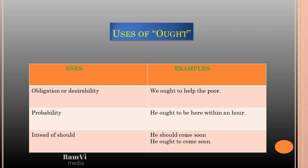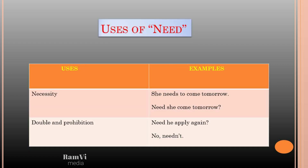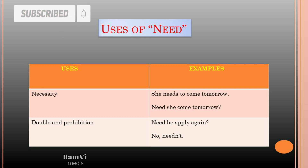Instead of 'should', we can also use 'ought to'. For example, instead of 'He should come soon', we can say 'He ought to come soon.' The next modal is 'need'. Its uses cover necessity, doubt, and prohibition. For necessity: 'She needs to come tomorrow.' In interrogative form: 'Need she come tomorrow?' For doubt and prohibition, we use 'need not' to confirm or deny a particular thing.